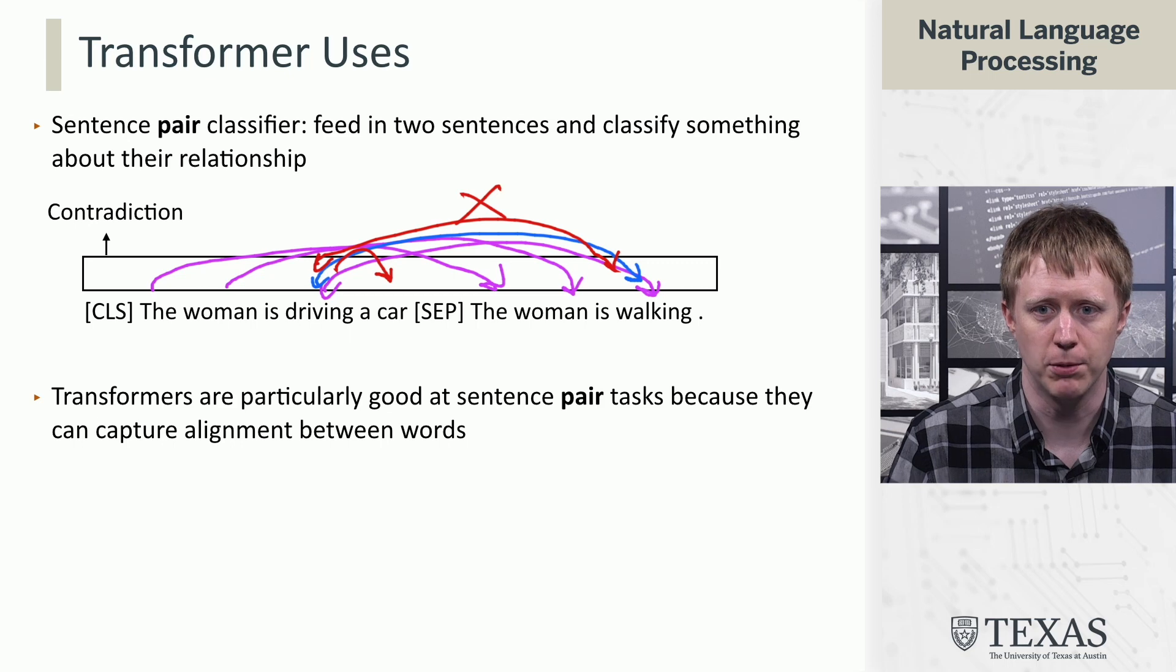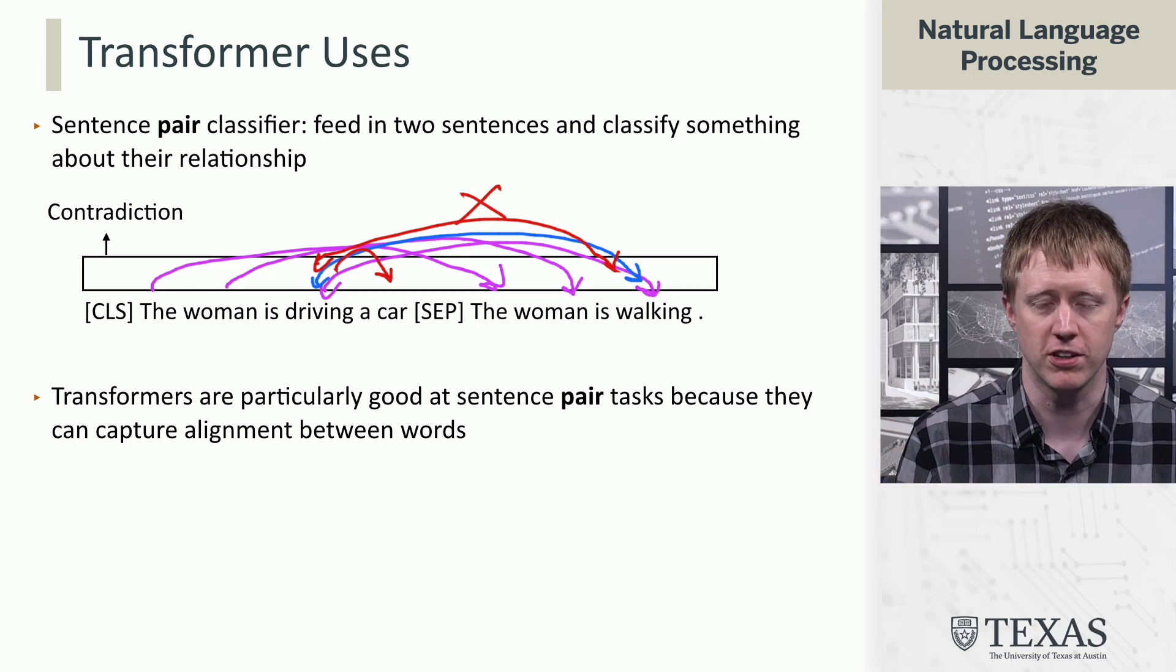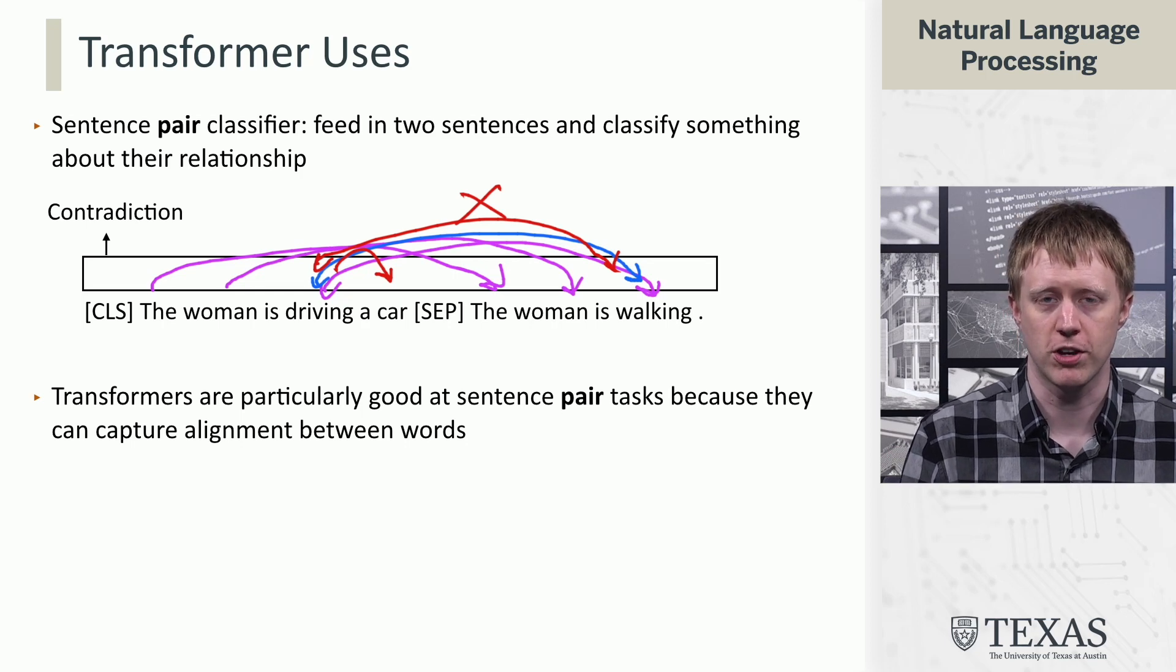And so ultimately the model will be able to make a prediction that reflects this kind of mismatch in the two sequences. So that's another thing that transformers can do.